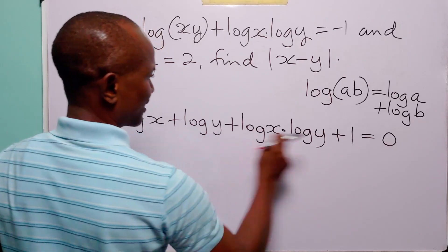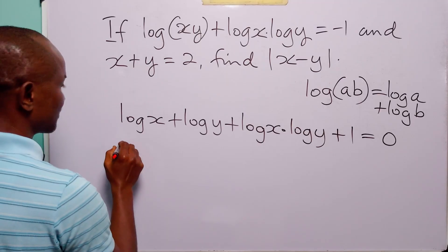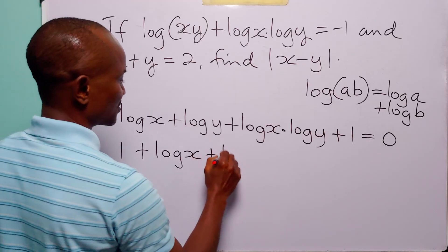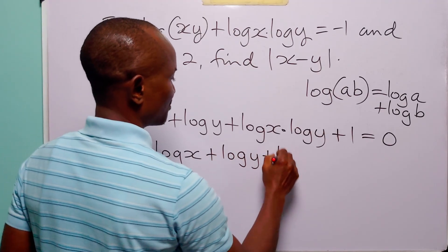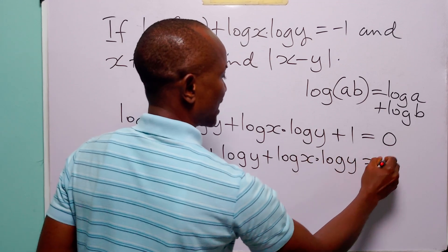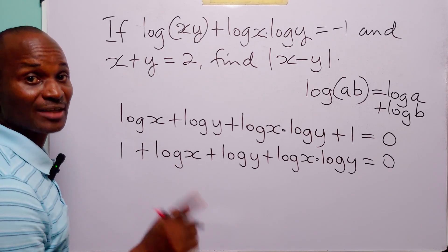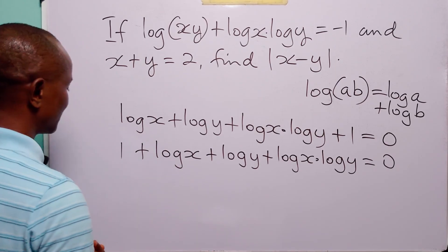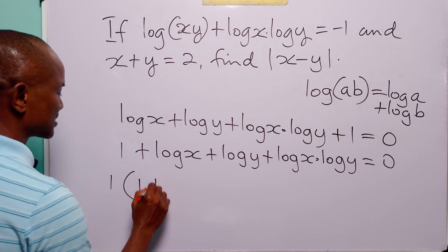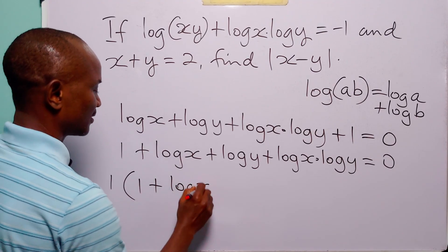Now let us see if we can factorize this expression. Let us bring 1 over to this point. We have 1 plus log(x) plus log(y) plus log(x) multiplied by log(y), and this is equal to 0. Between the first two terms, we have a common factor which is 1, because 1 can divide anything. So we have 1 into 1 divided by 1 is 1, and log(x) divided by 1 is log(x).